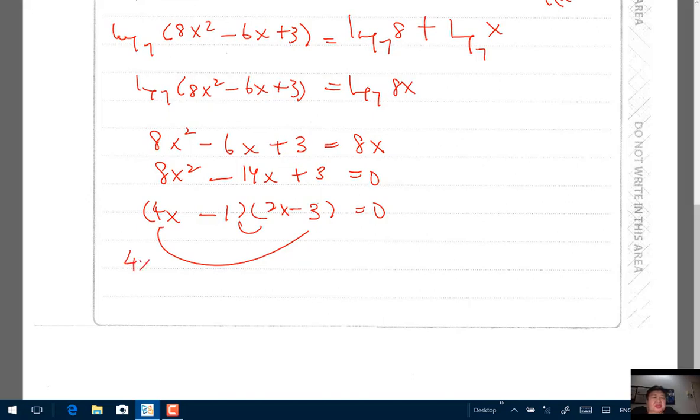I think the term, first term out, 4x minus 1 equals 0. x is therefore a quarter. The second expression is not a term. 2x minus 3 equals 0. So the second algebraic expression is therefore 3 over 2. And so your answer is x is a quarter or x is 1 and a half will satisfy the above logarithmic equation.